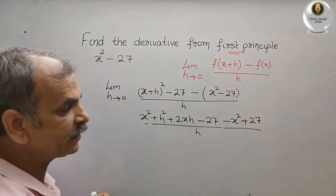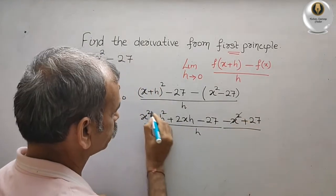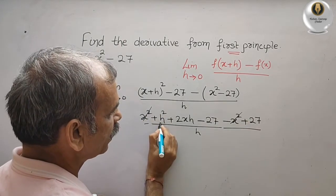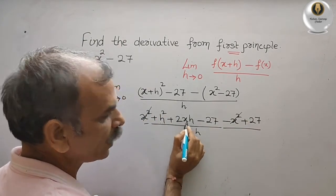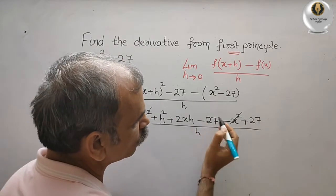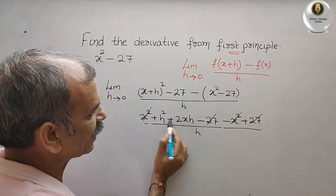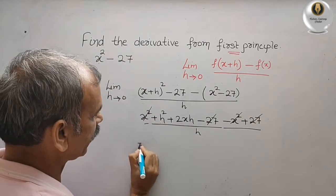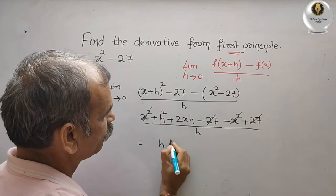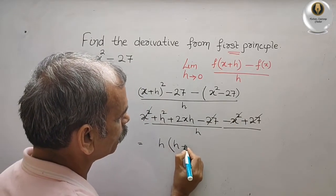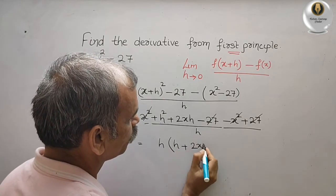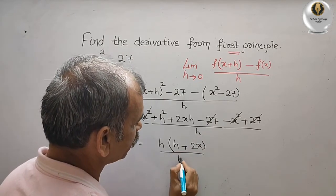You can see that x squared and minus x squared are gone. x squared is here, 2xh is here, minus 27 plus 27 is gone. Now you can see h is common, so we will take h as common. We will get h plus 2x, divided by h. Now h and h are gone.